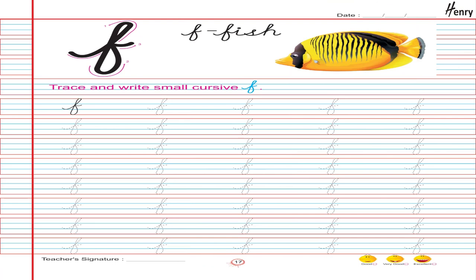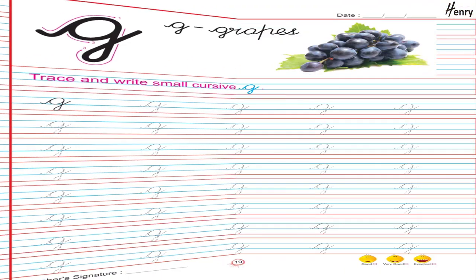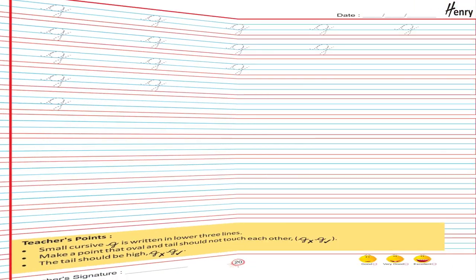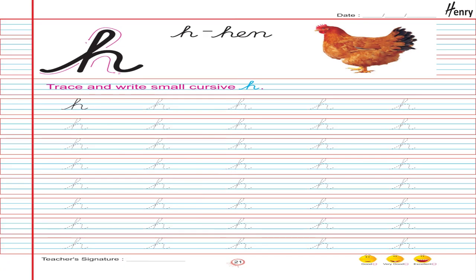F. Fish. Trace and write small cursive F. G. Grapes. Trace and write small cursive G. H. Hen. Trace and write small cursive H.